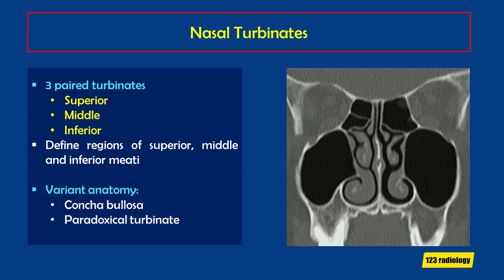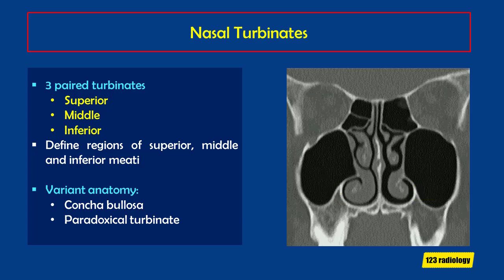Inside the nasal cavity, we have three pairs of nasal turbinates: the superior turbinates, the middle turbinates, and the largest, the inferior turbinates. These turbinates are important not just for humidifying air and acting as a filter, but they also define three distinct regions — the superior, middle, and inferior meati — which are important as part of sinonasal drainage pathways.